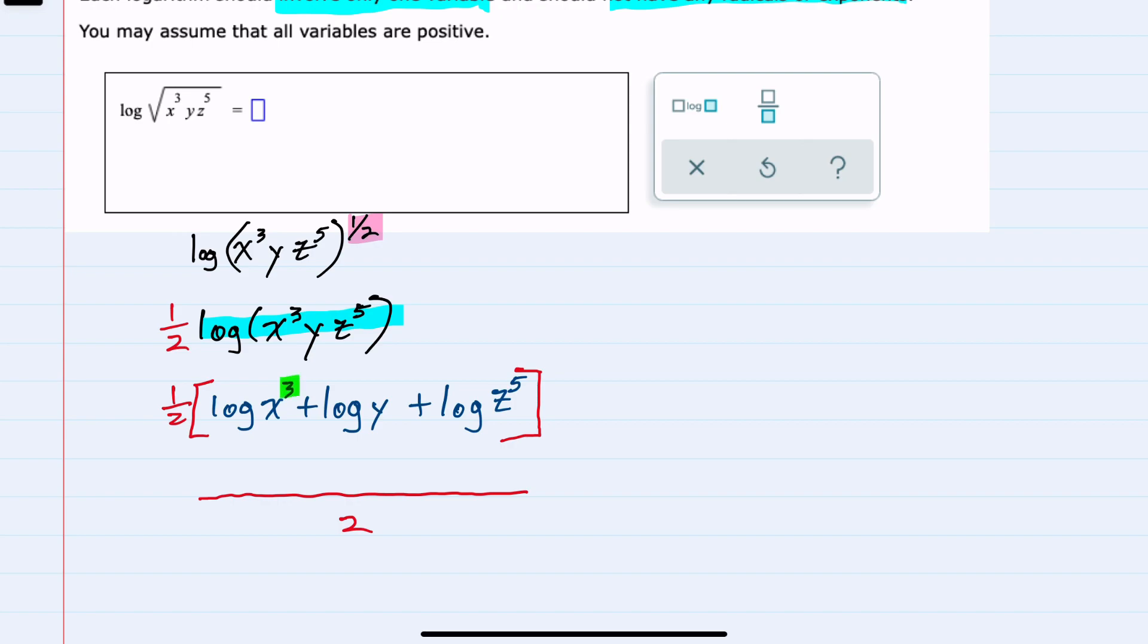This three would come down in front as three log of x. The log of y is simplified as much as possible, but the log of z to the fifth would have the five coming down as a coefficient, leaving the log of z. And all of this written over two is our expanded expression.